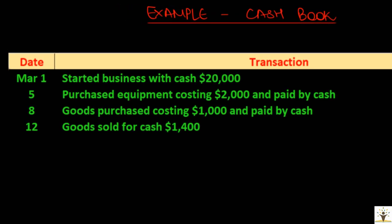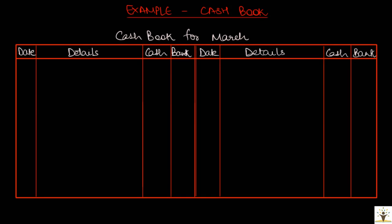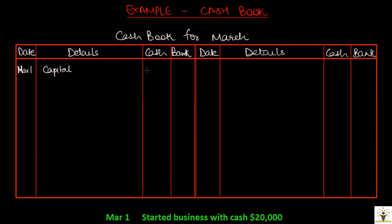So let us see some basic transactions. The first transaction: started business with cash $20,000. The owner has started business by putting in capital in the form of cash, $20,000. So cash is increasing in the business, hence it will be recorded on the debit side of the cashbook. Record the date March 1, details will be capital, and $20,000 in the cash column.